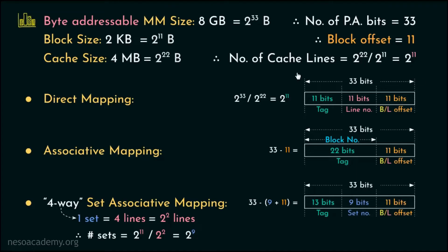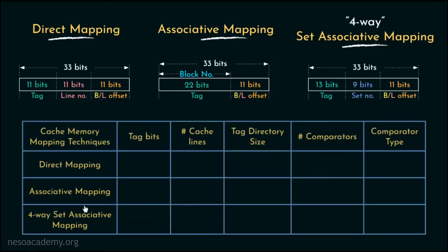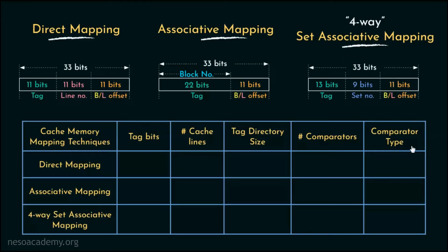So these are the different physical address splits for direct, associative, and 4-way set associative mapping. Now let's find the key differences using these physical address splits with the help of a chart, where parameters are kept column-wise and rows represent different mapping techniques. Coming to tag bits, used for identification of main memory blocks inside cache lines: in direct mapping we use 11 bits, in associative mapping we use 22 bits, and for 4-way set associative mapping, 13 tag bits are used.